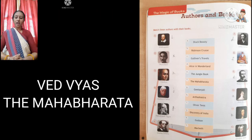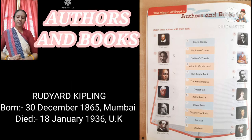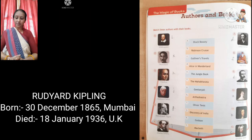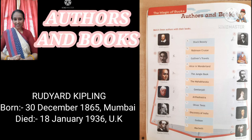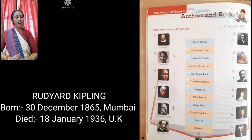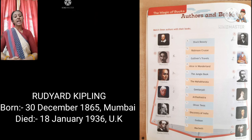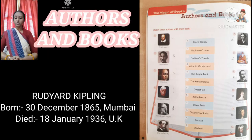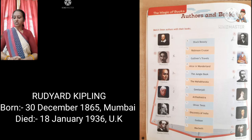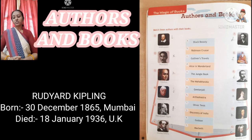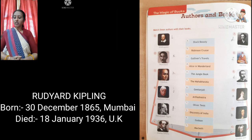The ninth one is Rudyard Kipling. Rudyard Kipling is an English journalist who was born in India. He was born on 30th of December 1865 in Mumbai and died on 18th of January 1936 in London, UK. The name of his book is The Jungle Book.